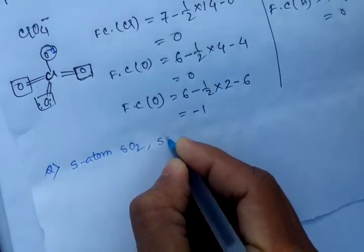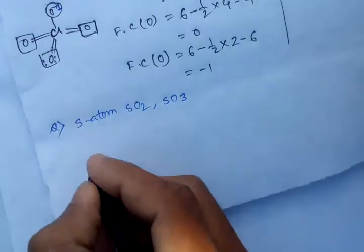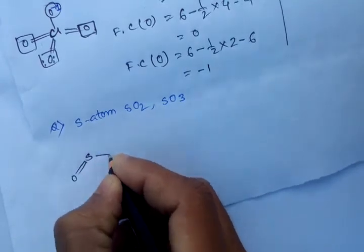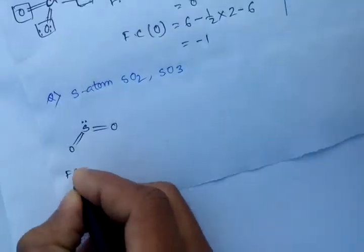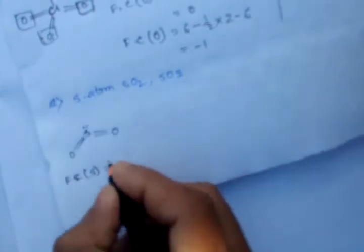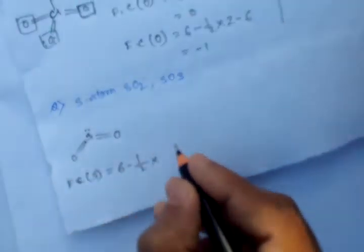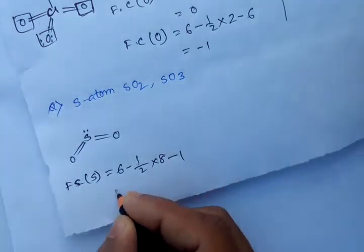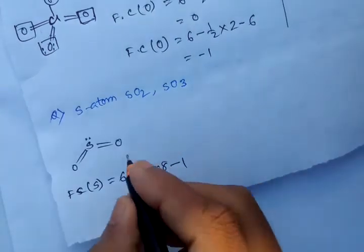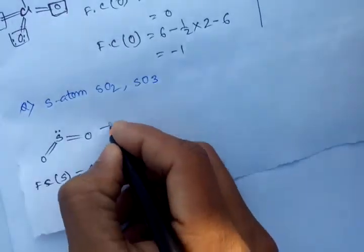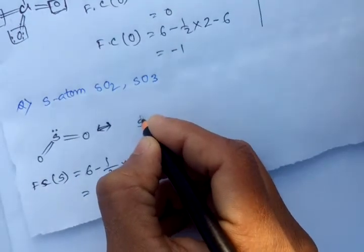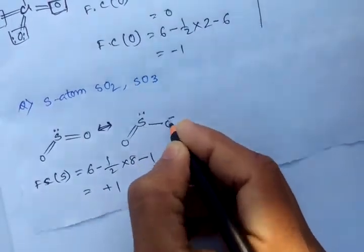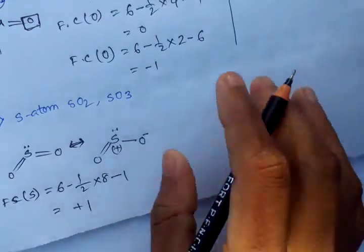For SO2 and SO3 molecules: the formal charge of the sulfur atom in SO2 equals valence electrons six, minus half times bonded electrons — two, four, four, eight — so half of eight equals four, minus lone pair one, equals plus one. So the sulfur in SO2 carries a formal charge of plus one. If we draw another resonance form of this compound, plus one is still the formal charge.